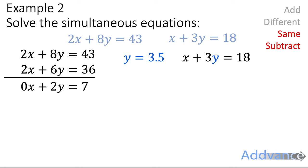So substitute y equals 3.5 into one of the equations. So I get x plus 3 times 3.5 equals 18. 3 times 3.5 is 10.5. And we can do the opposite of adding 10.5, we subtract 10.5. We get x equals 18 minus 10.5, which is x is equal to 7.5. And that is the x.